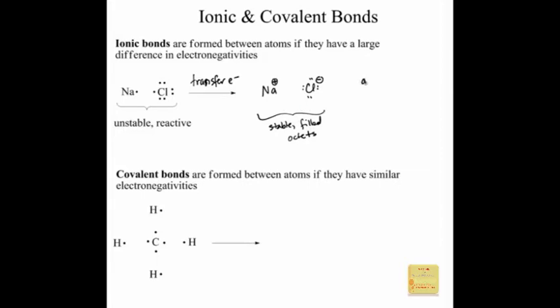An ionic bond, when you have a plus and a minus charge, is called a salt. It's a network structure. It's not correct to describe NaCl as a molecule — every sodium cation is surrounded by chlorine ions in the salt crystal structure, and every chlorine is surrounded by sodium. So we try not to call it a molecule; instead, it's a salt and a network structure.